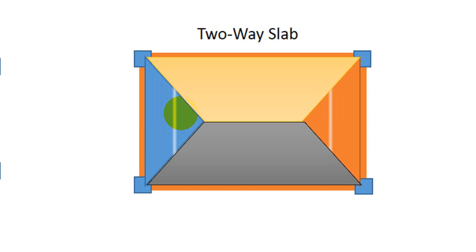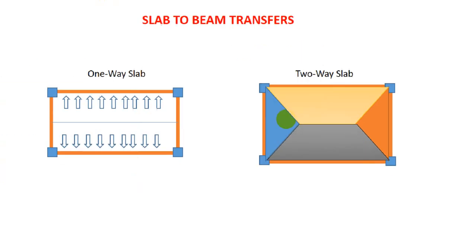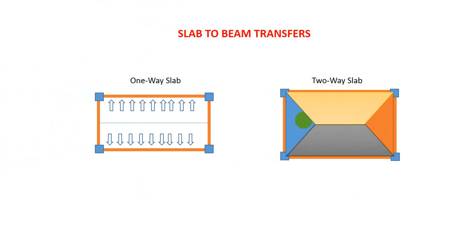So we get four load regions in total: for the shorter length of the slab we get rectangular (triangular) load portions, and for the longer side we get trapezoidal load portions. For a one-way slab, load transfers in one direction only; for a two-way slab, load transfers in both directions. Also, for a one-way slab the main reinforcement is provided in one direction and distribution reinforcement in the other.